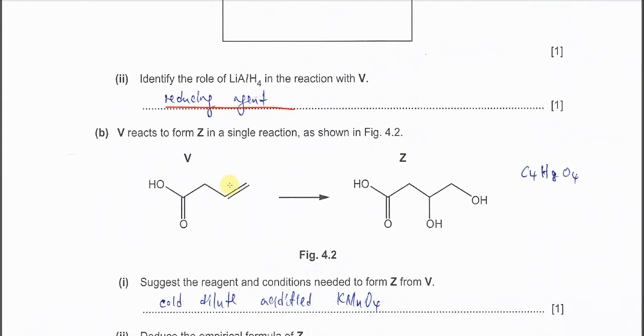V reacts to form Z in a single reaction. The carboxylic acid has no change, so it's this part that changes. It forms a diol. We know that it must involve cold dilute permanganate, so it can break the pi bonds and form the diol.